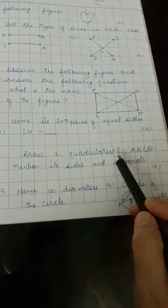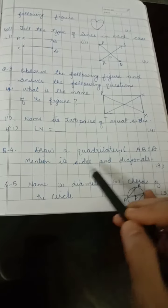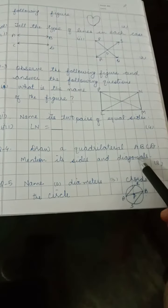Question number 4: Draw a quadrilateral ABCD. Mention its sides and diagonals.